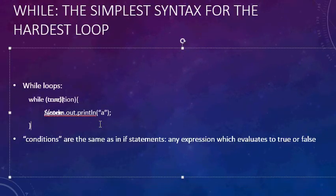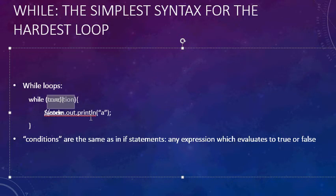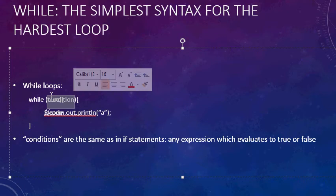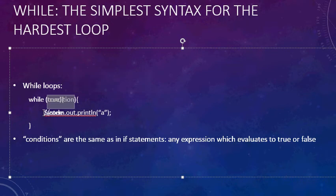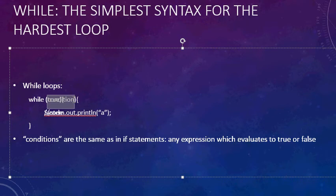Conditions are the same as an if statement — any expression which evaluates to true or false. It can be the word true or false. If it's false, the loop never gets executed. It can be something like 'i less than 5' or 'x less than 10' — anything that evaluates to true or false. The way the loop works is: when you enter the loop, if the condition is true, the code gets executed, and when you reach the end you go back to the beginning and check again.